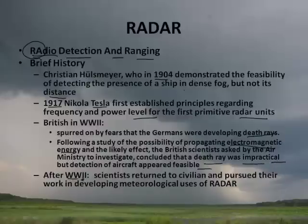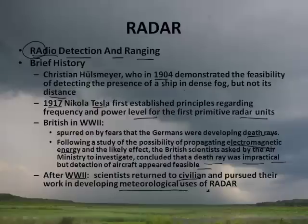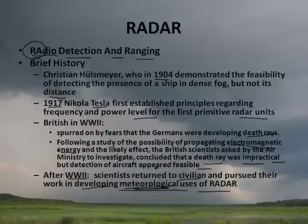After World War II, all these scientists who were developing radar — they had also used it to detect ships on the ocean — became civilians, and they said, 'I wonder if we could use this to determine meteorological issues in terms of predicting the weather.' Because they realized you could also detect weather. So the use of radar for weather-related issues really started after World War II, and the science of meteorology has changed significantly because of that.